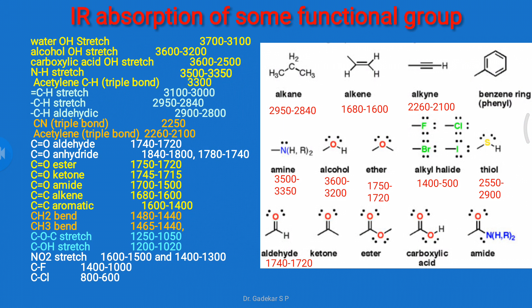Next is IR absorption of some functional groups. In organic compounds, there are many functional groups such as alkane, alkene, alkyne, benzene, amine, alcohol, ether, alkyl halide, thiol, aldehyde, ketone, and ester. These functional groups absorb particular IR radiation at particular frequencies. There are also different factors affecting this frequency, but generally: alkane appears at 2950 to 2840 cm⁻¹, and alkene C=C appears near 680 to 600 cm⁻¹.